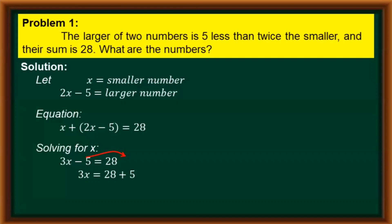Combining 28 and 5, we have 33. So our equation is 3x equals 33. And lastly, to solve for x, we simply divide both sides by 3. The 3 in the numerator and denominator on the left side cancel out. And on the right side, 33 divided by 3 equals 11. So x is equal to 11.